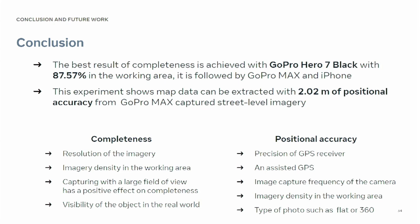By capturing street-level imagery, you can generate large amounts of map data that will be available for your processing. Two meters positional accuracy was achieved with GoPro Max, and the best completeness was with GoPro Hero. Thank you for listening — that was a quick one, but if you have any questions, I'm happy to answer.